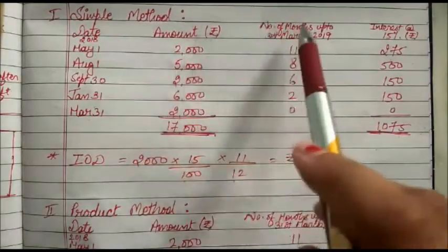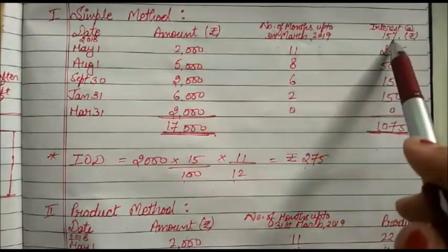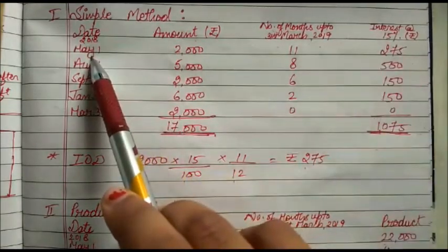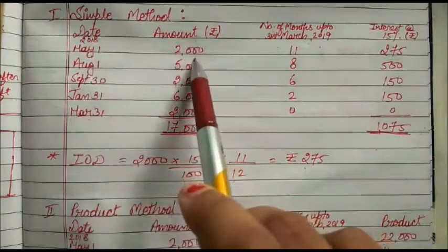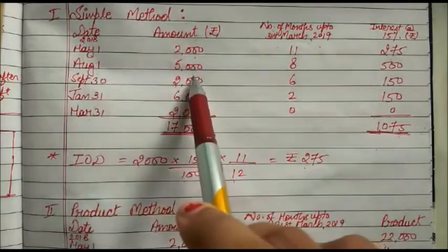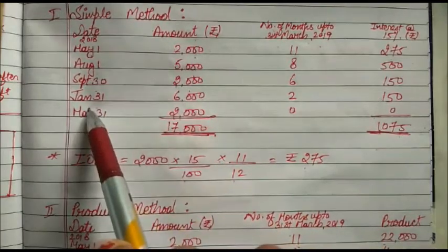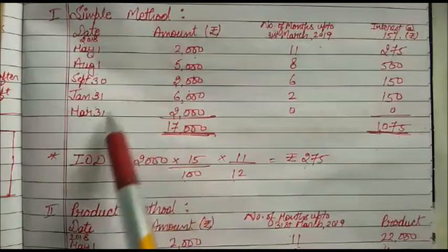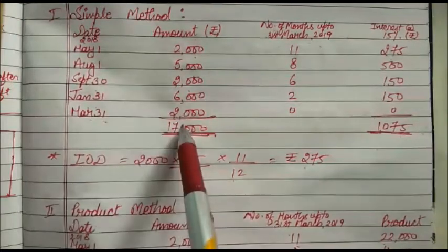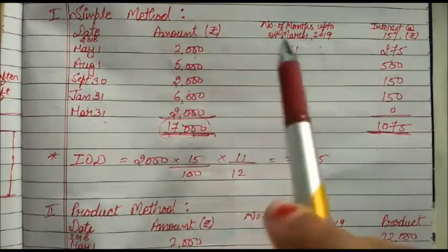We have given the dates and amounts; we need to find the number of months remaining up to 31st March. On May 1st the partner withdrew ₹2,000; on August 1st ₹5,000; on September 30th ₹2,000; on January 31st ₹6,000; and on March 31st ₹2,000. The total amount withdrawn is ₹17,000.